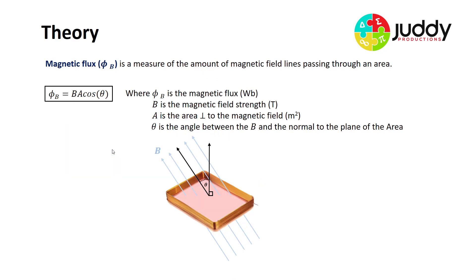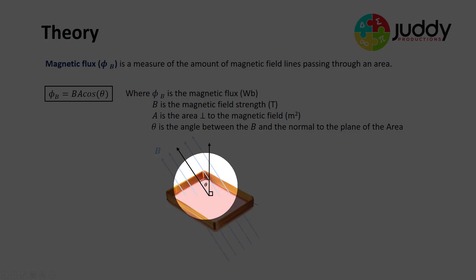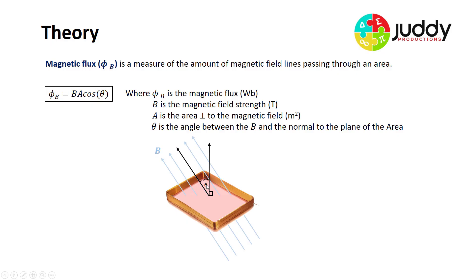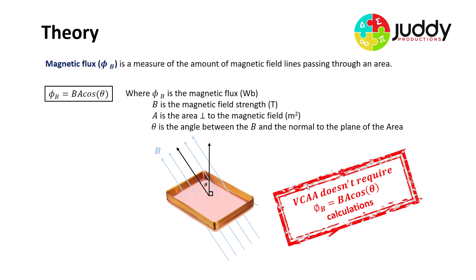Let's revisit the theory. Magnetic flux measures the amount of magnetic field lines passing through an area. A more detailed version of the equation involves an angle theta measured between the magnetic field and the normal to the plane of the area: Φ = BA cosθ. Here, theta is the angle between B and the normal to the area. It's worth noting that VCAA does not require students to use this equation for calculations, but students should be aware that between parallel and perpendicular orientations there are varying values of magnetic flux.